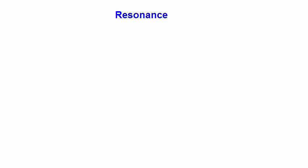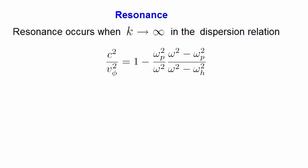Let's look at the cut-offs and resonances in more detail. First, the resonance. The resonances occur when the wave number, k, approaches infinity in the dispersion relation. So here is the dispersion relation, this time written as c squared on vph squared. On the left-hand side, we can expand the phase velocity vph in terms of ω on k, and so the left-hand side becomes this expression. If k is to go to infinity, that means the denominator on the right-hand side must go to zero.